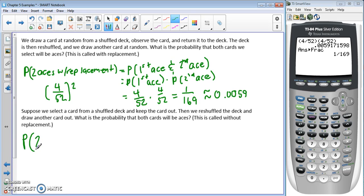We want the probability of two aces without replacement. We have the probability that the first is an ace and the probability that the second is an ace given the first is an ace.